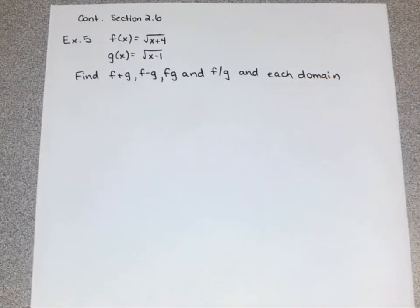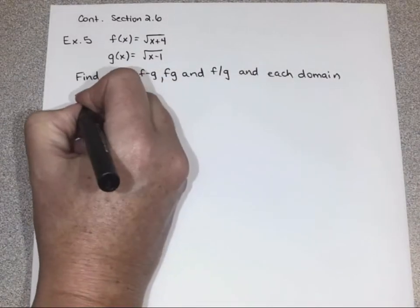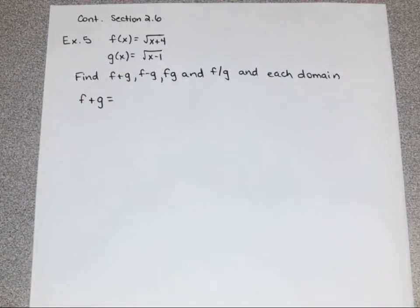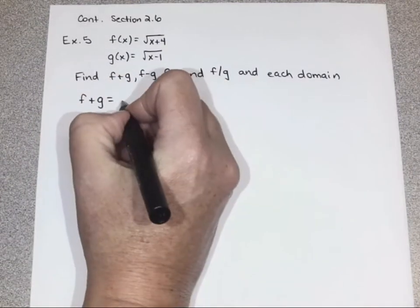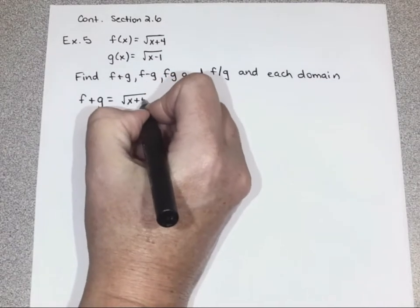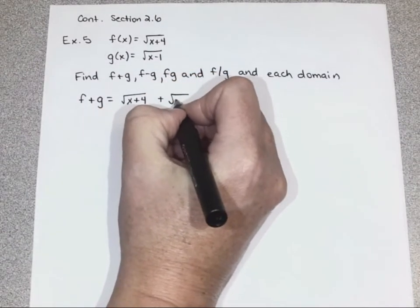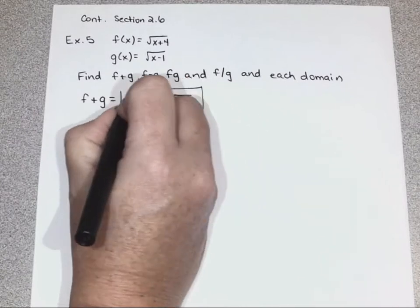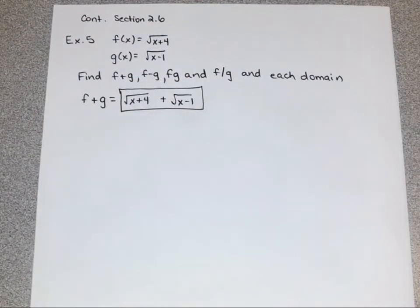The one we did on Monday had linear functions, and I wanted to make sure I included one that had a little more complicated functions. But when you're asked to find f plus g, don't overthink this. You're not allowed to combine terms if they're not alike. So essentially, the function is just the first root plus the second root. You're not allowed to combine those unless you're multiplying or dividing.